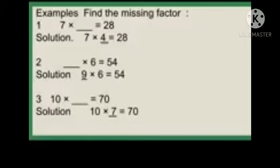Good morning students, today we will study the example of how to find the missing factors. See the example here. The first example is: find the missing factor — 7 into blank equals 28. So which number do you have to multiply by 7 to get the product 28?